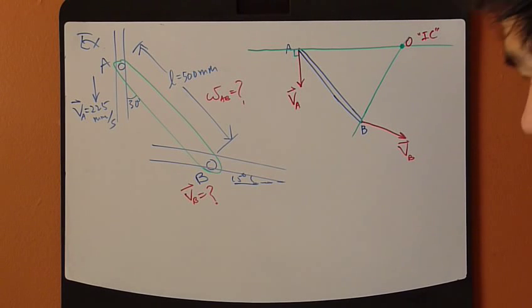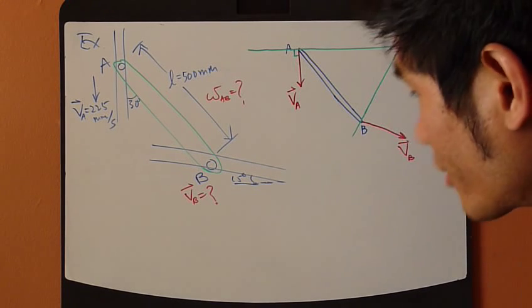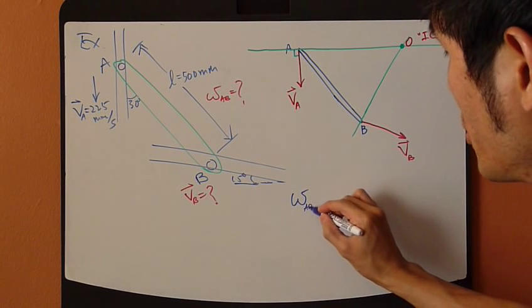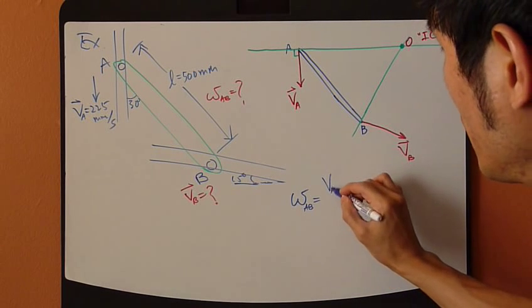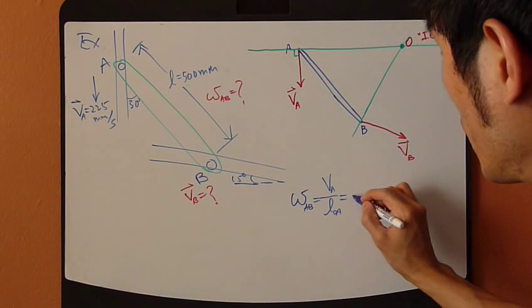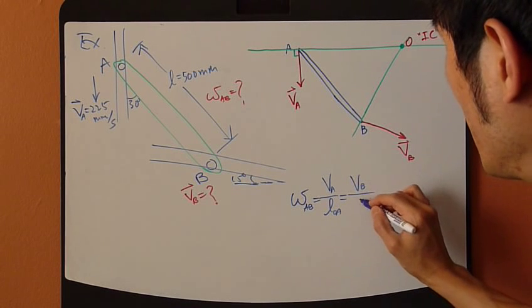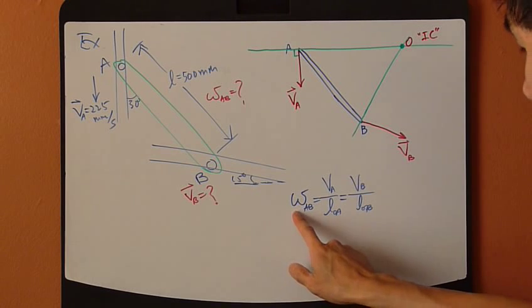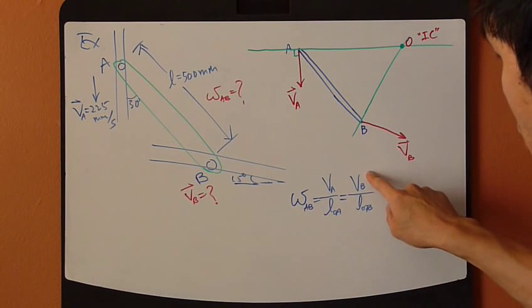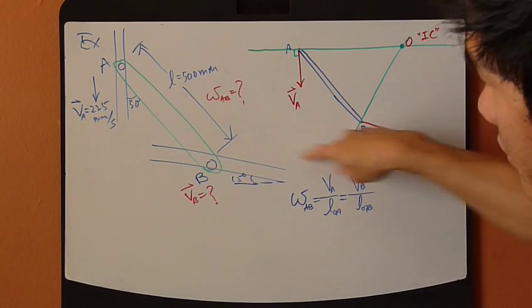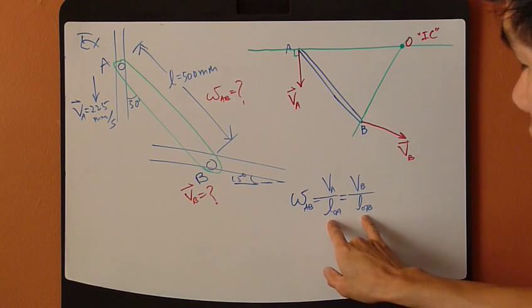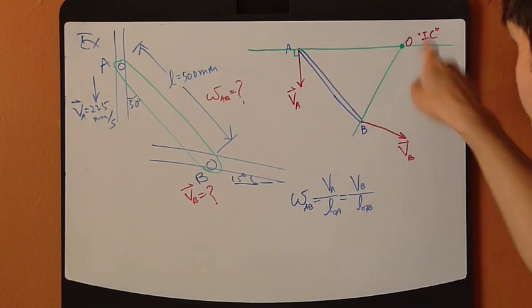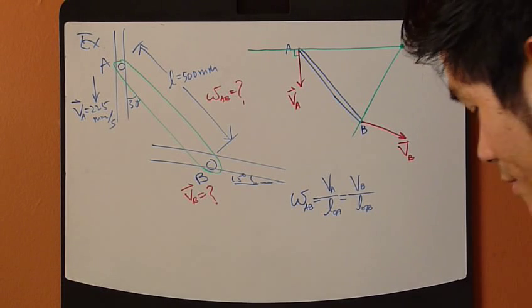So, now, next, write down the equation. So, omega, for the rigid body, equals VA divided by LOA, also equals to VB divided by LOB. This is the unknown. VB is also the unknown. VA is given. What's left is these two. These two can be figured out quite easily from this diagram right here.